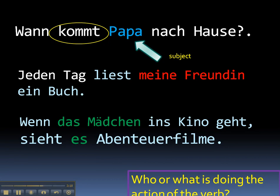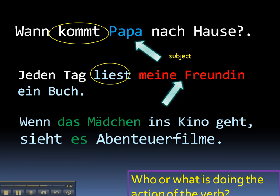In the second example, we have a time phrase starting the sentence: Jeden Tag liest meine Freundin ein Buch — every day my friend reads a book. So what's the action? Liest, reads. And who or what is doing that reading? In this case, meine Freundin. So she's the subject and in the nominative case.